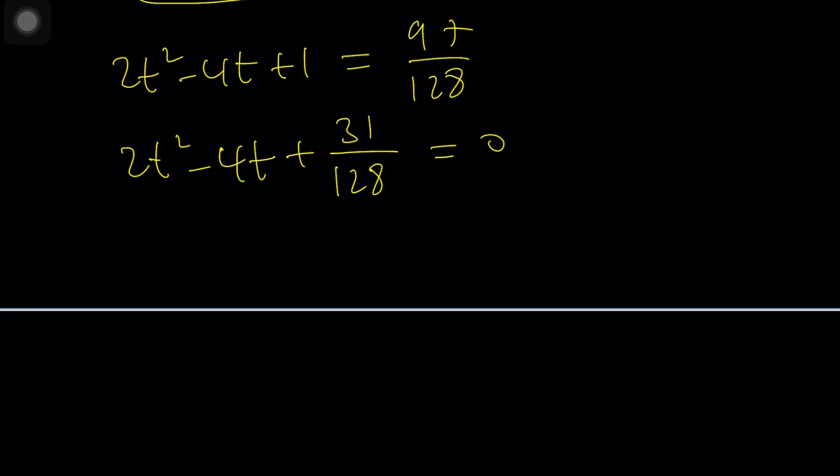At this point you could multiply everything by 128 to get rid of the fraction or you can use the quadratic formula. I'll multiply because it's easier. 256t squared minus 512t plus 31 is equal to 0.